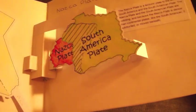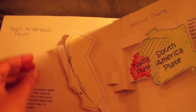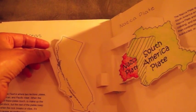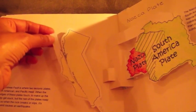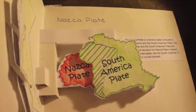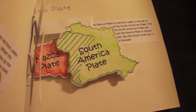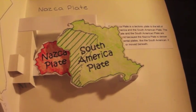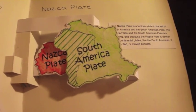And then the last page has two different pop-ups. It's got the San Andreas fault, and you can see the strike-slip fault, so you can pull the tabs. And then the NASCA plate—if you look when I'm opening it up, you can see the subduction of the NASCA plate under the South American plate.